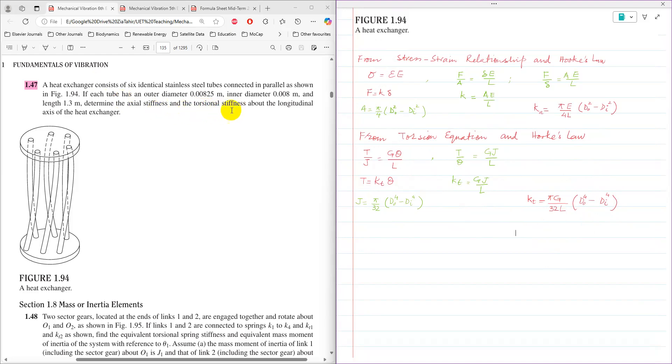For torsional stiffness, the expression can be derived from torsion equation and Hooke's law. Torsion equation is T over J equals G theta over L. It can be rearranged to get T over theta. For torsion, Hooke's law is T equals K_T theta. Then K_T is GJ over L.